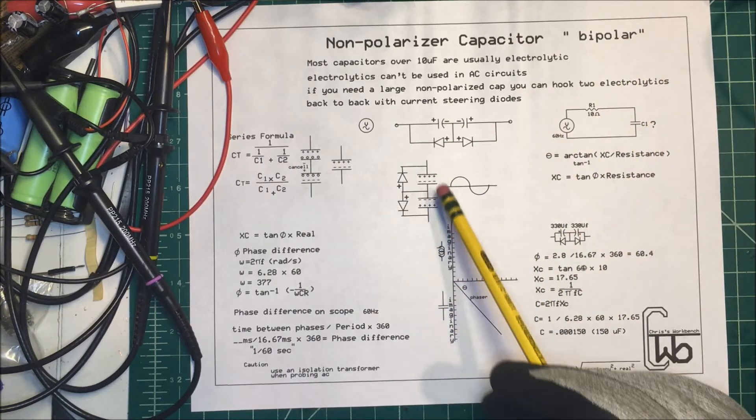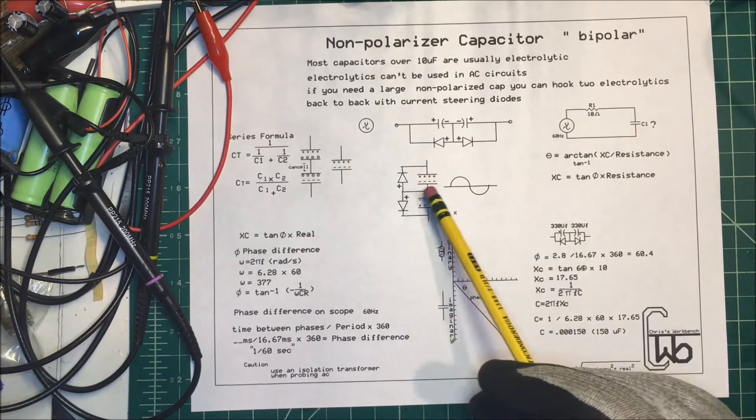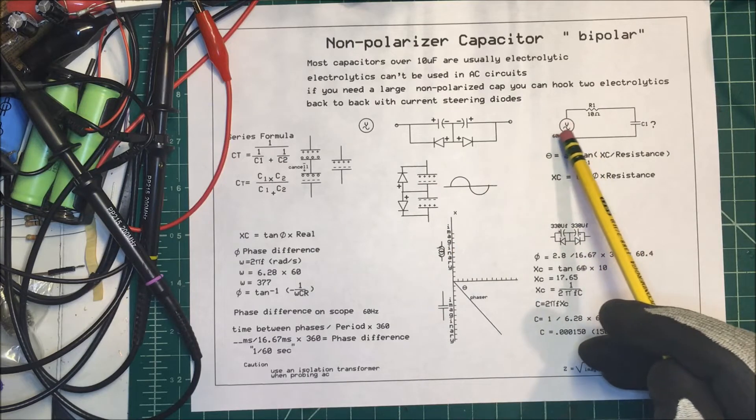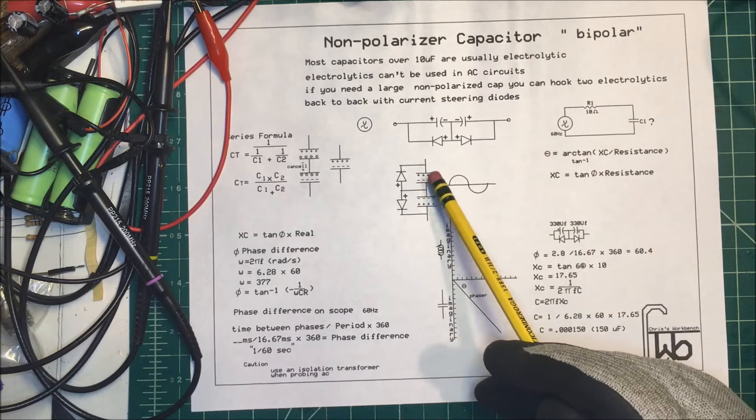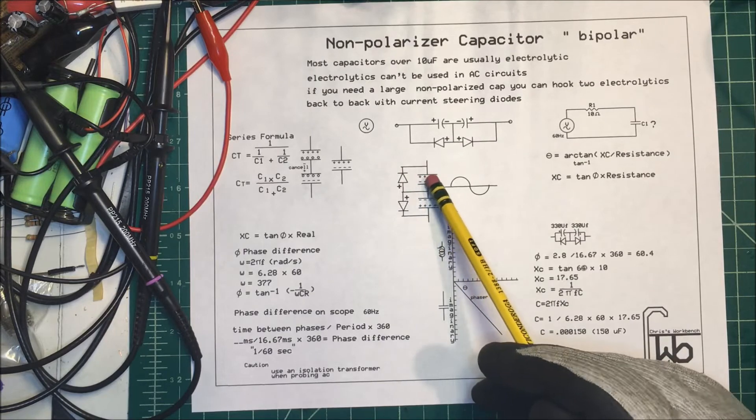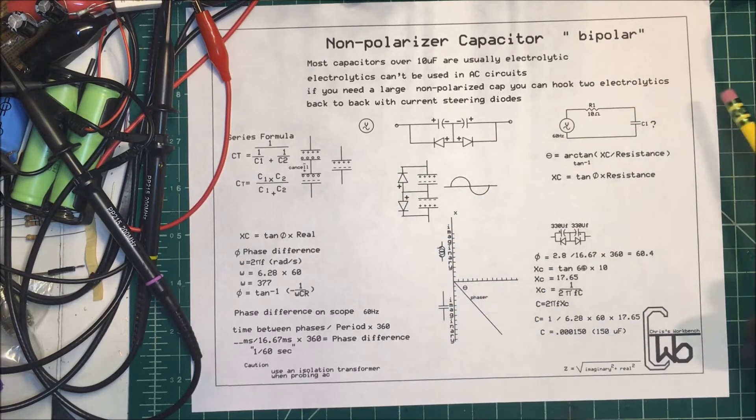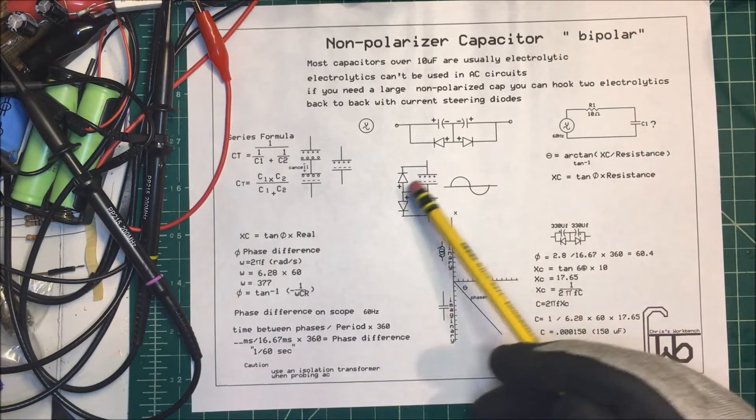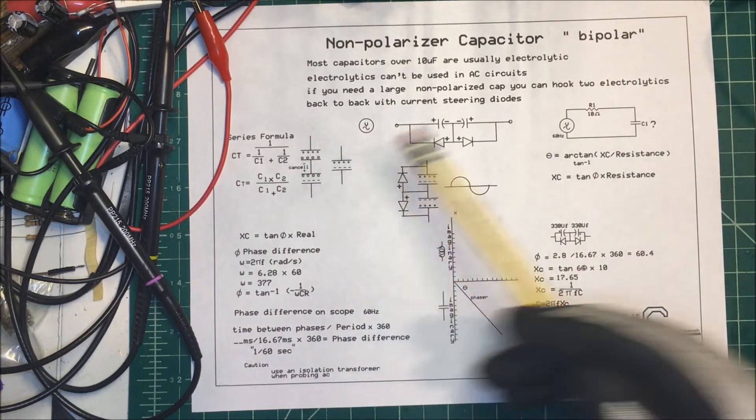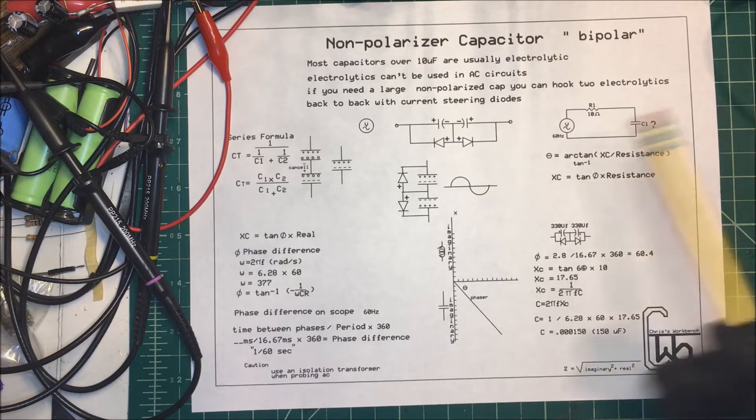So instead of finding your capacitor reactance using your, in this case, we're going to use 60 hertz, I think if we use 30 hertz to find the capacitor reactance, it will show us that our capacitance is going to be cut in half also, just like in series over here, but for a different reason.